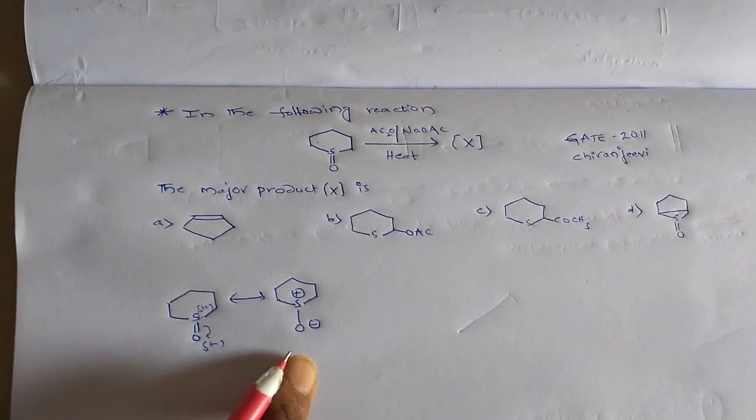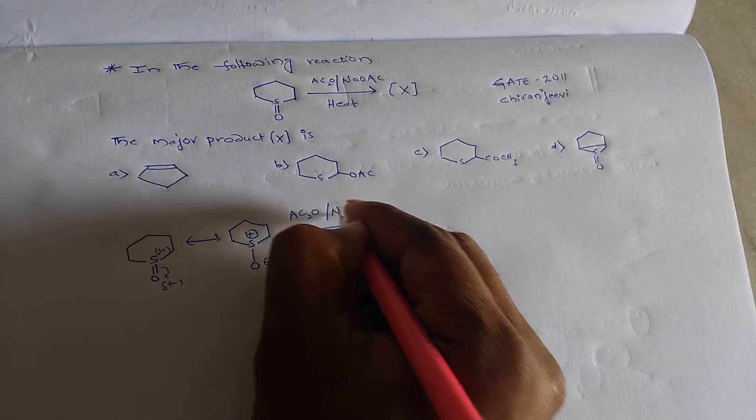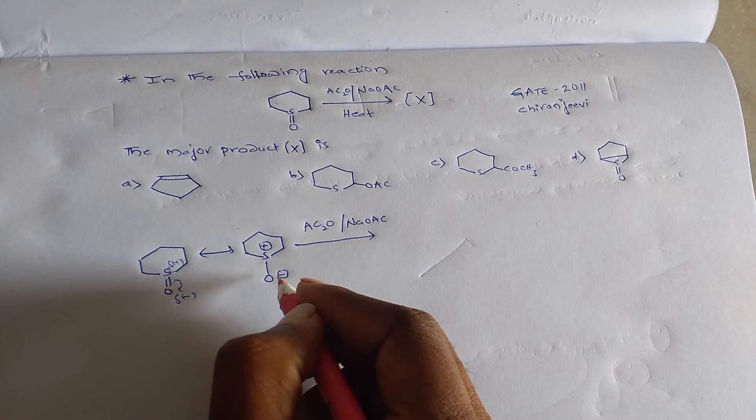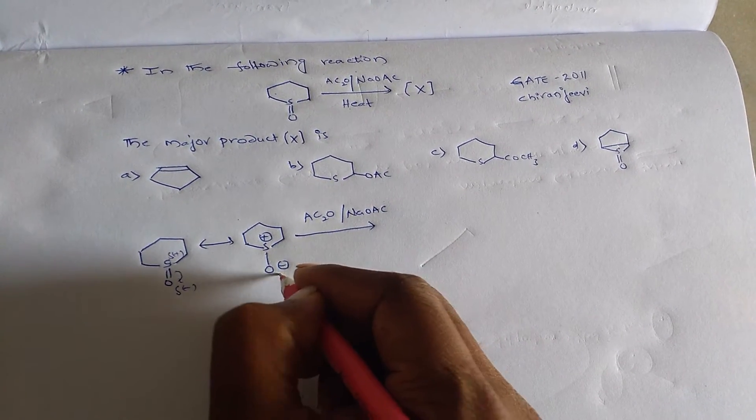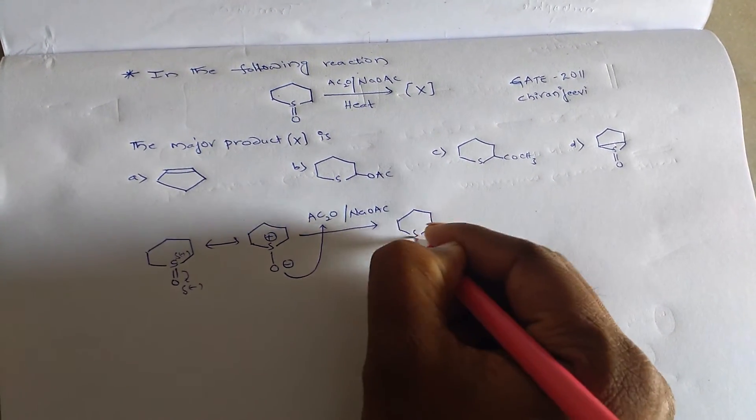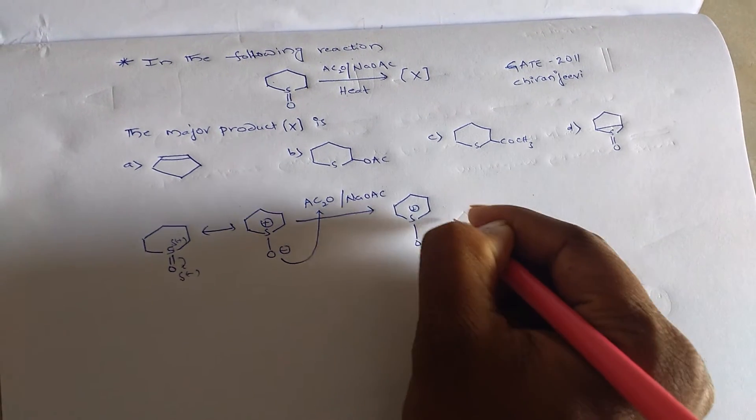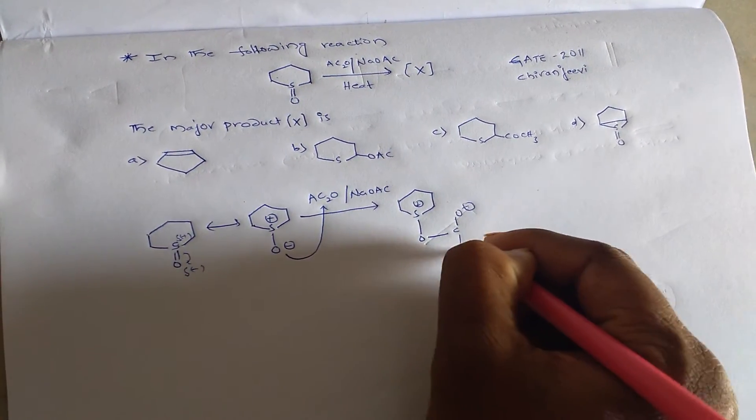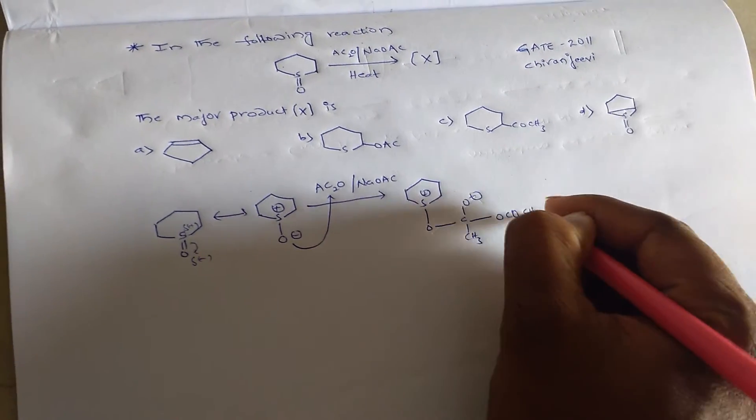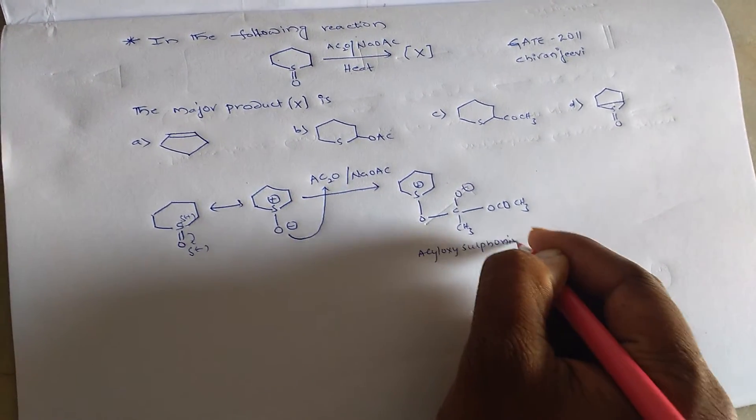This sulfoxonium ion on reaction with acetic anhydride AC2O in presence of sodium acetate, the oxygen of this sulfoxonium ion reacts with acetic anhydride and forms acyloxysulfonium ion.